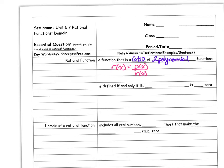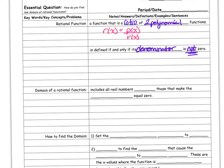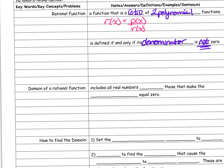A rational function is defined if and only if its denominator is not zero. If the denominator is zero, the function is undefined. So the domain includes all real numbers except those that make the denominator equal to zero.